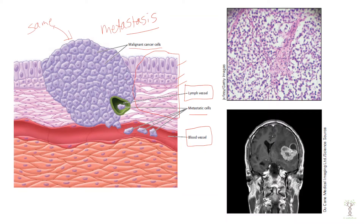Cancer cells develop from normal cells that overgrow and form a tumor. You can see a tissue sample here — sometimes biopsies are taken of lumps that we can feel and you can look microscopically at the cells to potentially identify cancer cells. This is also showing an x-ray with a tumor inside the brain.